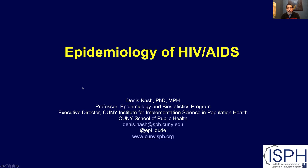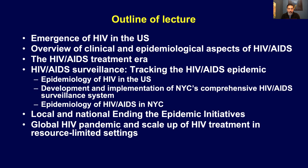Hi, I'm Dennis Nash, and this week we'll be covering the epidemiology of HIV and AIDS. The outline of the lecture is here. We'll be covering a lot, including the emergence of HIV in the U.S., an overview of the clinical and epidemiological aspects of HIV and AIDS, the HIV-AIDS treatment era, and a lot on HIV-AIDS surveillance and how to track the HIV epidemic. As part of that component of the lecture, we'll talk about the epidemiology of HIV in the U.S., and we'll delve into quite a bit of detail about how HIV is tracked in New York City.